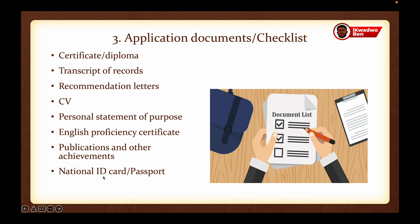The next thing to take care of is your publications or any other achievements. This is relevant to individuals who want to apply for postgraduate studies — either a master's degree, a PhD, or research studies. If you have any publications, you can attach them to your university and scholarship application. Finally, you should have your national ID card or passport, as you cannot apply to a university outside your country without one. This specific document is requested when applying for a scholarship.